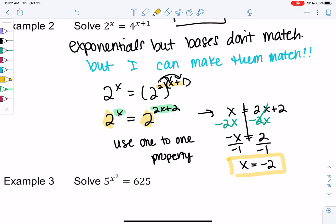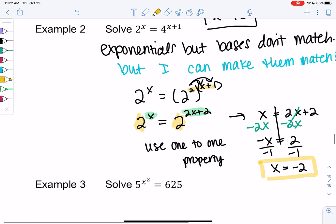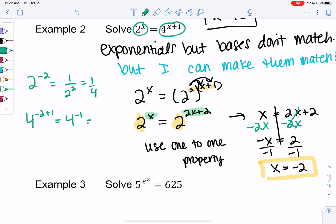And you can always check your work. So 2^(-2) for the left side would be 1 over 2² or 1/4. And then 4^(-2+1) for the right side would be 4^(-1) or 1/4. So they match.